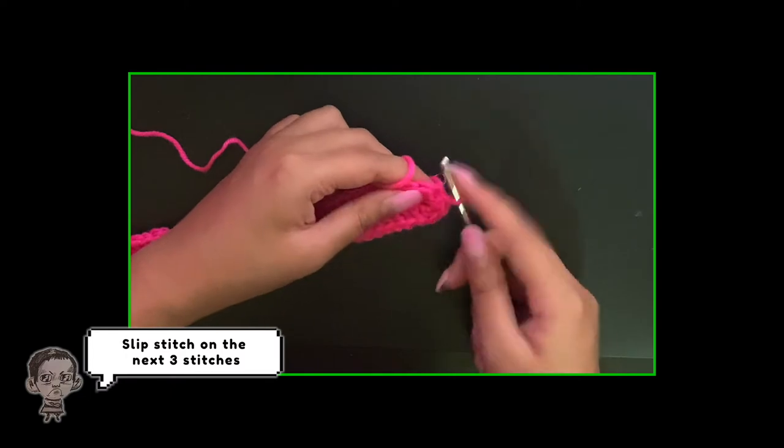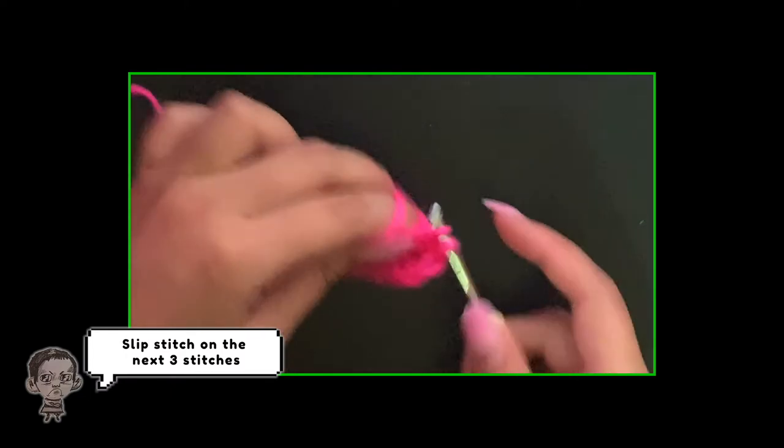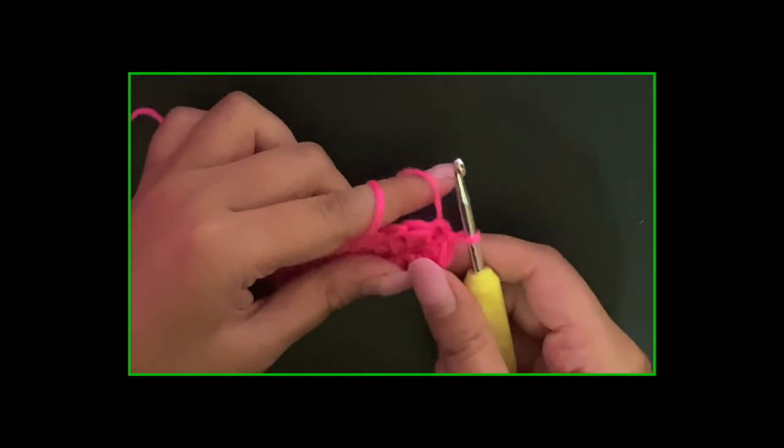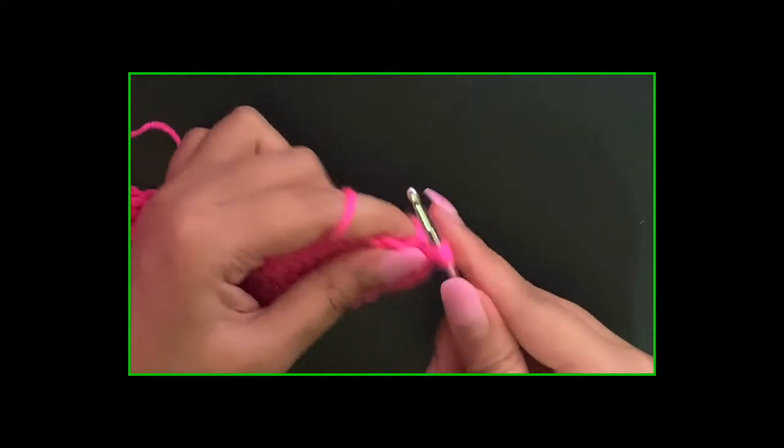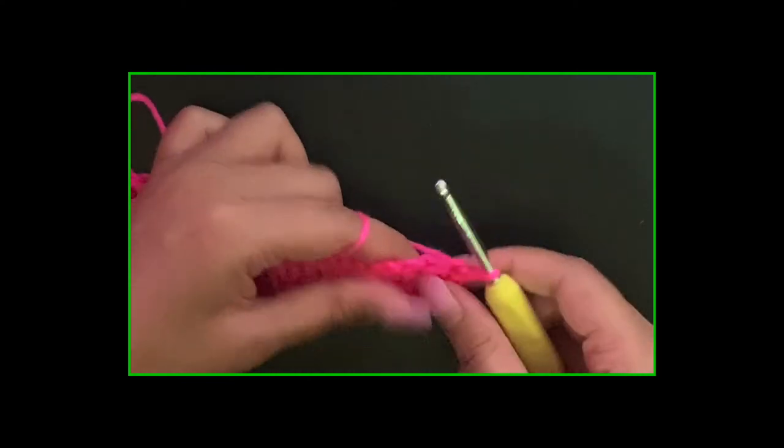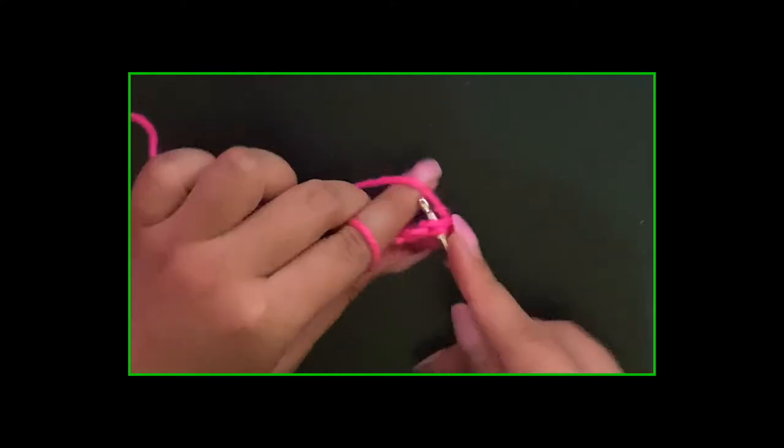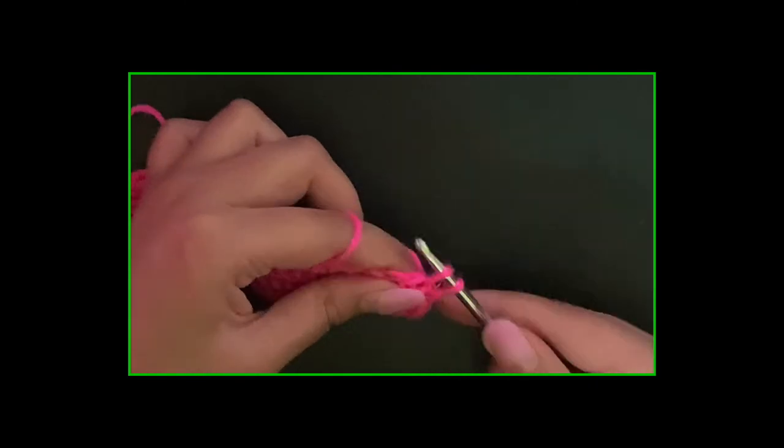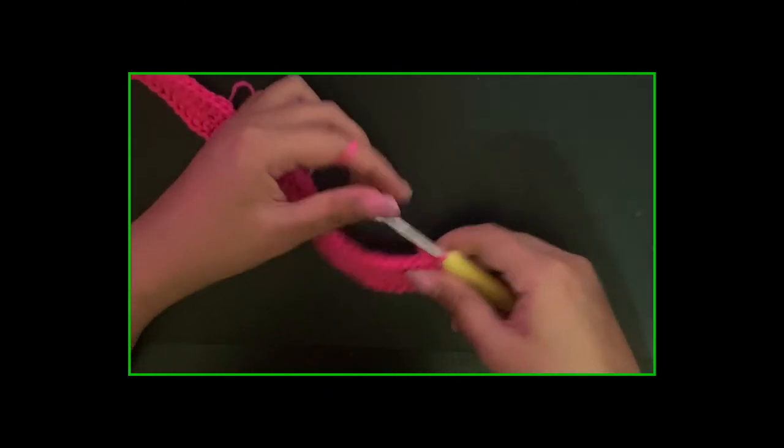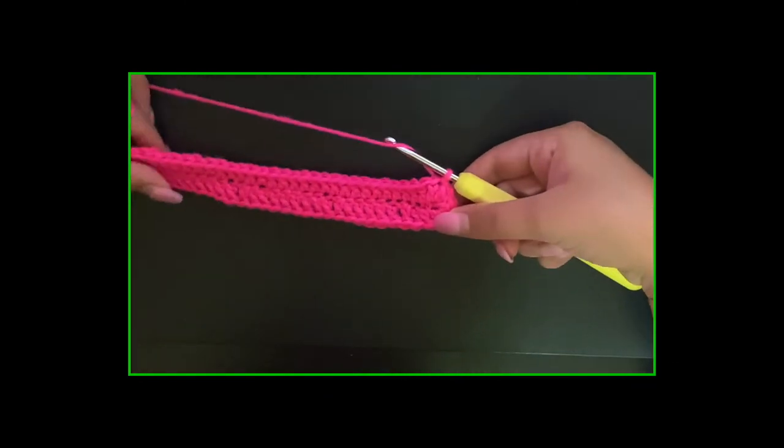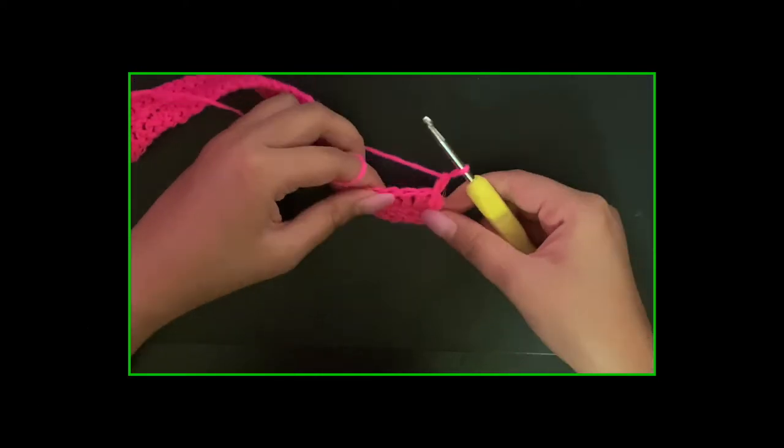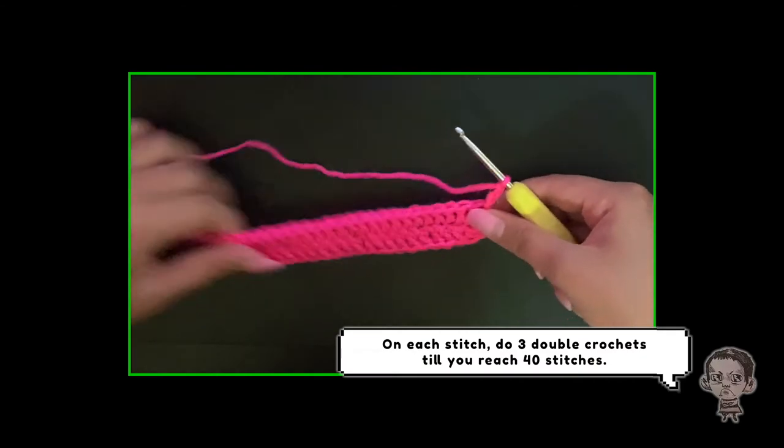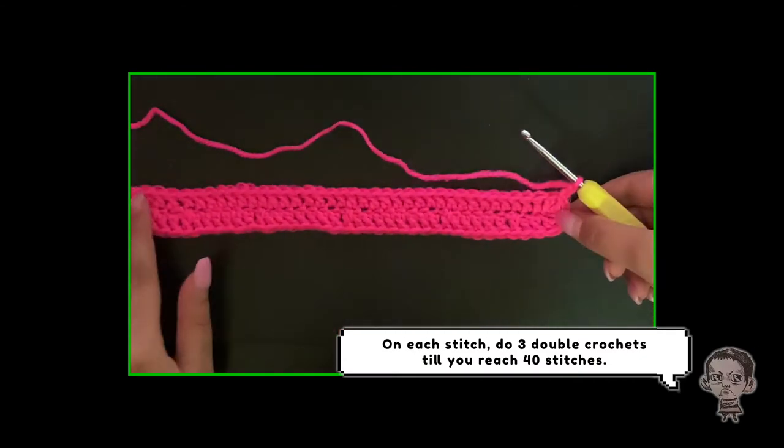Slip stitch on the next 3 stitches, then 1 double crochet on each stitch.